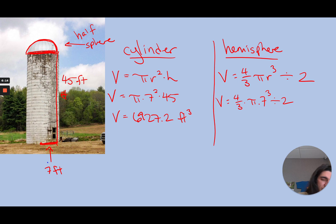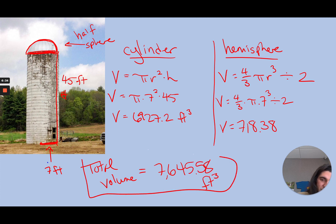Which for just the hemisphere I get 718.38. So the total volume, if I just add those together. So that's how much can actually be stored in the grain silo. So definitely tougher but kind of nice to see these things in action.